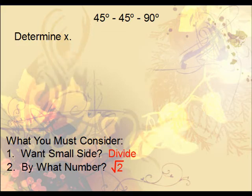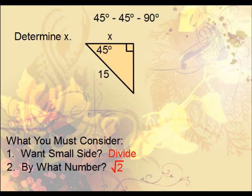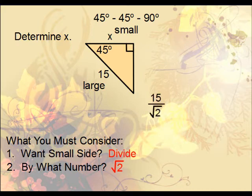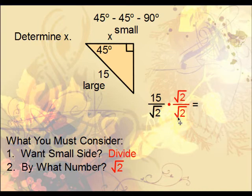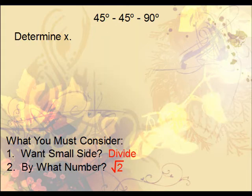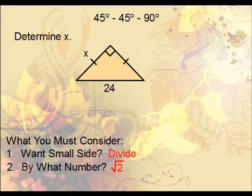Next example: identify which side is small and which is large. Here x is the smaller side, so divide instead of multiply. Take 15 and divide by the square root of 2. Since we don't leave radicals in the denominator, rationalize by multiplying by root 2 on top and bottom, giving 15 root 2 on top and 2 on the bottom.